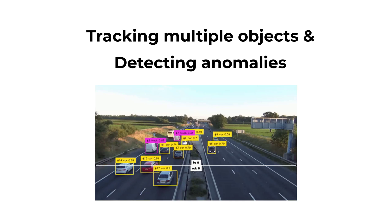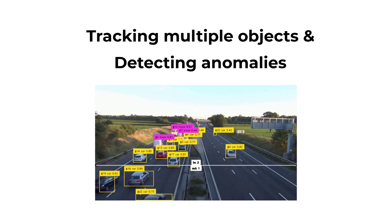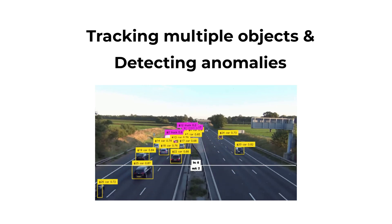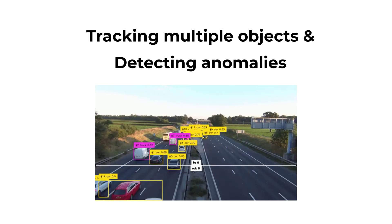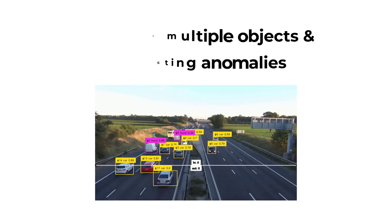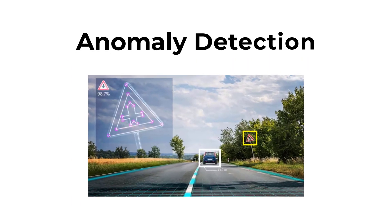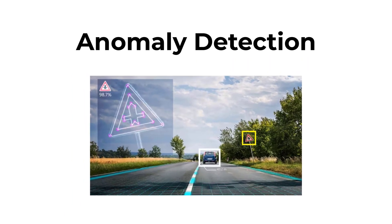In this project, you use computer vision to track multiple objects such as people and vehicles in videos. Anomaly detection flags anything unusual, such as a car going the wrong way or suspicious behavior in security footage.